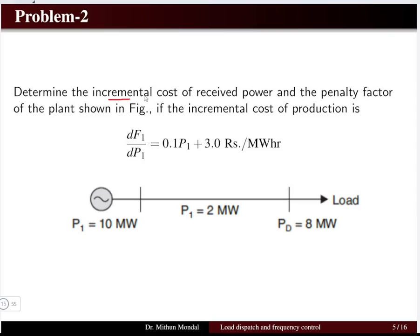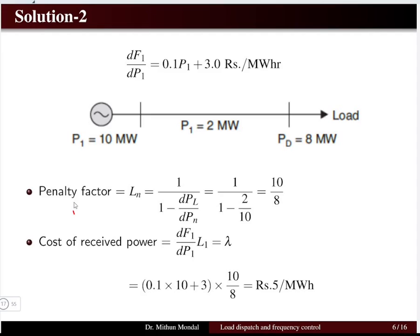The next problem asks us to determine the incremental cost of received power and the penalty factor of a plant shown in a single line diagram. The incremental cost of production is given in rupees per megawatt hour. Plant 1 is a generator supplying 10 MW, with the load taking 8 MW and a transmission loss of 2 MW.